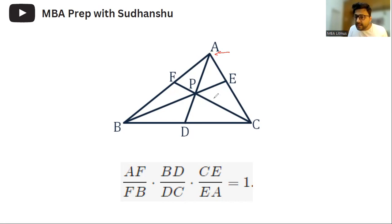For example, here it's a Cevian. It may or may not be a median or an angle bisector or an altitude, but in a general form, it is called a Cevian. Now, what does Ceva's theorem say? Ceva's theorem says a very simple aspect: AF to FB, BD to DC, CE to EA, these ratios, when you multiply, they give you equal to one.